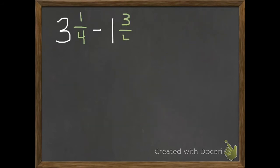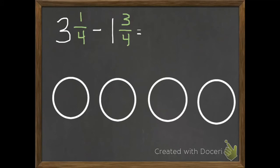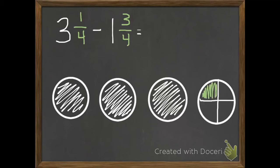Okay, my second example problem. We have 3 and 1 fourth and we're going to subtract 1 and 3 fourths. So I'm going to draw my picture, 3 wholes, 1 fourth. And we're going to subtract 1 whole and 3 fourths. So I'm going to start with my 1 whole. So there's 1 whole I subtracted. And I need to subtract 3 fourths. So I get rid of 1 fourth.